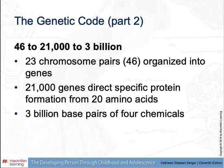Continuing with the genetic code: there are 21,000 genes that directly specify protein formation from 20 amino acids. There are 3 billion base pairs of four chemicals: adenine paired with thymine and guanine paired with cytosine — the letters A, T, G, C.